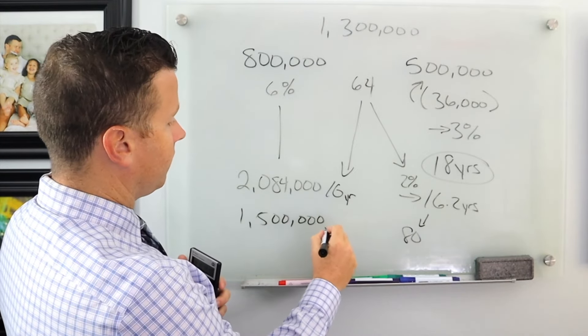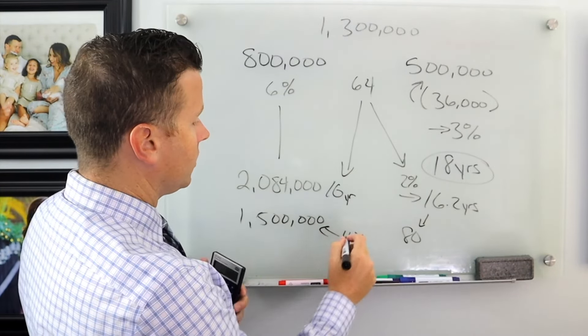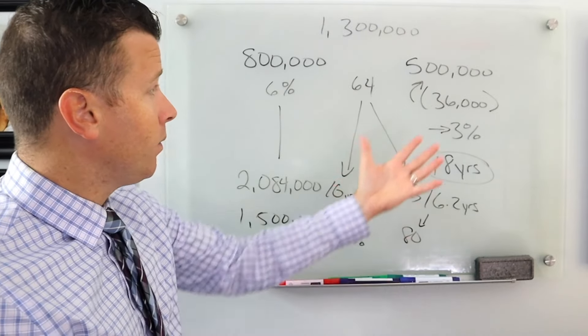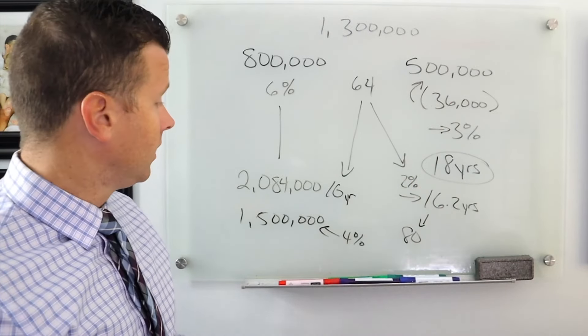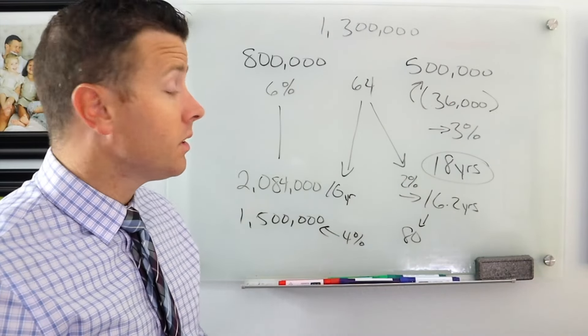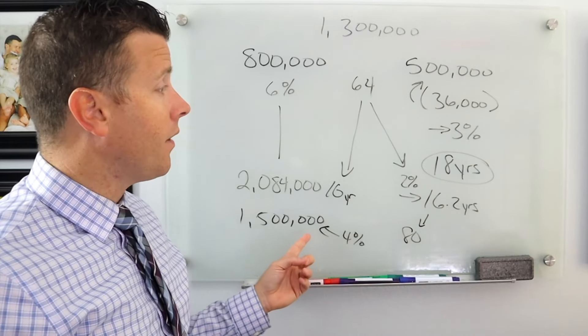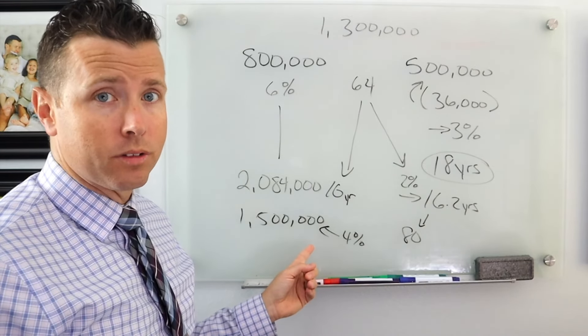So this is earning 4%. So what I'm able to say now is, we've drained this $500,000. Now you've got 1.5. And with inflation, let's just say this is at a million dollars. So now at 80, we're going to have a million dollars.